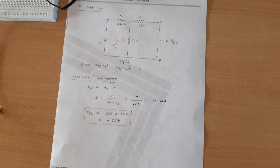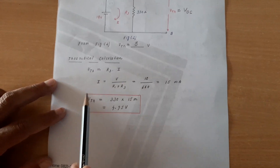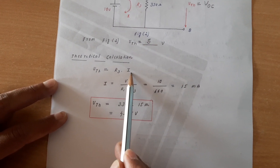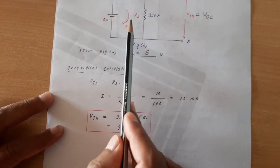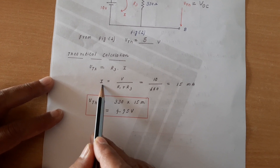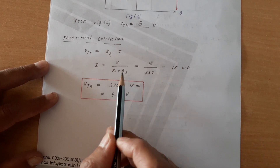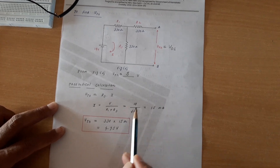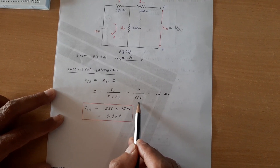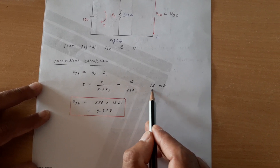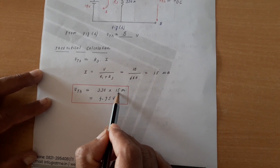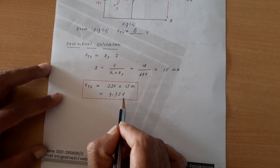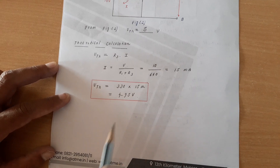Let us verify this theoretically. To find VTH I use the formula: VTH = R3 × I, where I is the current in loop 1. With the output open, I = V / (R1 + R3) = 10 / (330 + 330) = 10 / 660 = 15.15 mA. Multiplying by R3: VTH = 15 mA × 330 Ω = 4.95 volts. So practically we got 5 volts and theoretically 4.95 volts — these match closely.